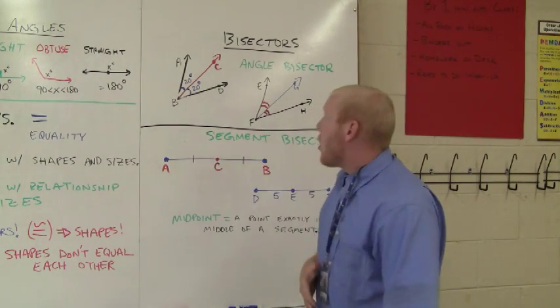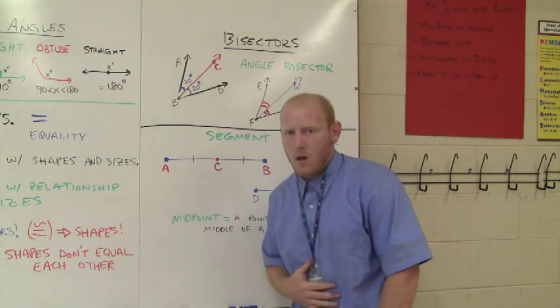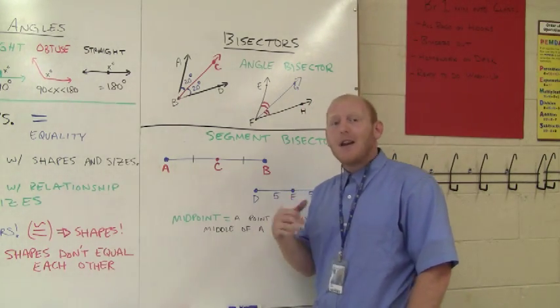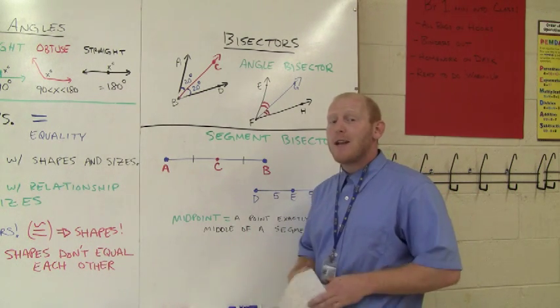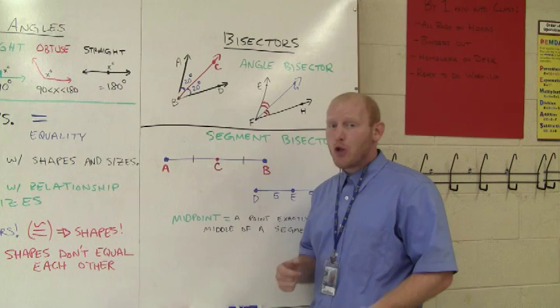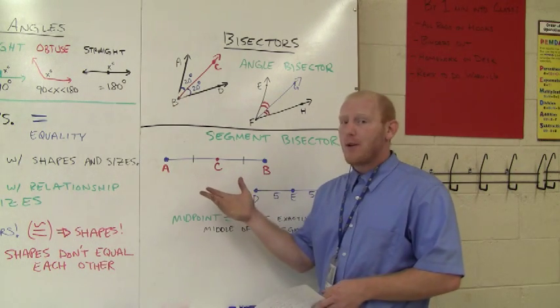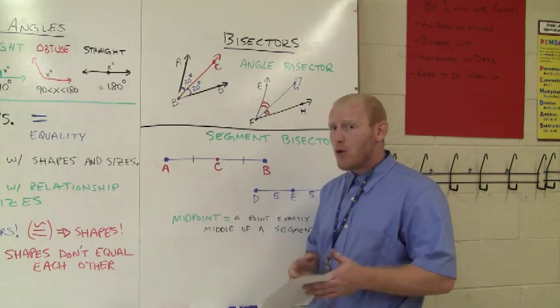Building on congruence, we then go into bisectors. The word bisector, again in root, bi means two. Now a bisector breaks something into—and it breaks up into two congruent parts. Hence why I brought up the congruence. It breaks it up into two congruent parts.